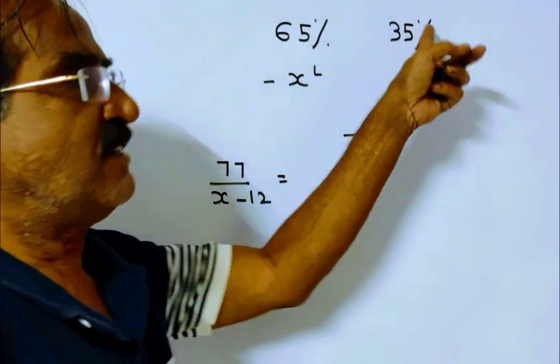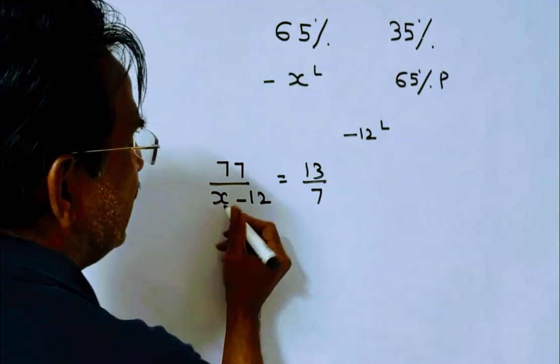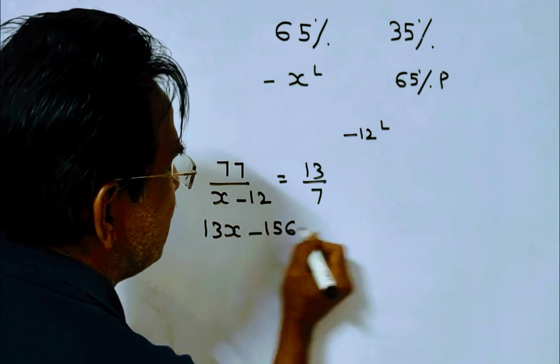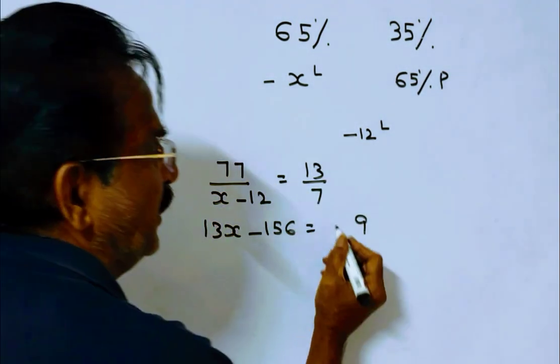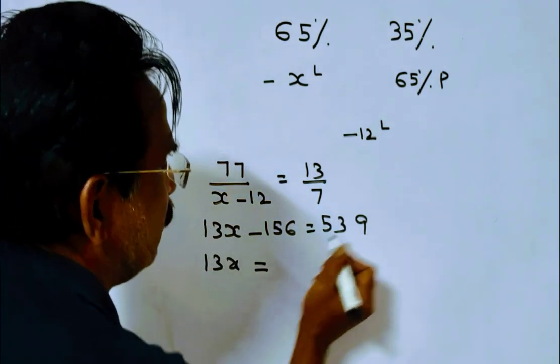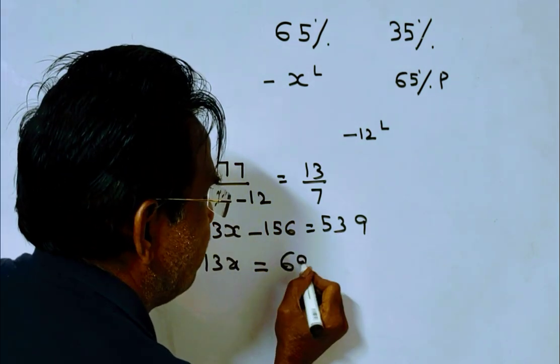49 plus 4 is 53. So 13x equals 539 plus 156, which is 695. Therefore, x equals 695 by 13. 13 times 5 is 65, 4 remains. 13 times 3 is 39, 6 remains.